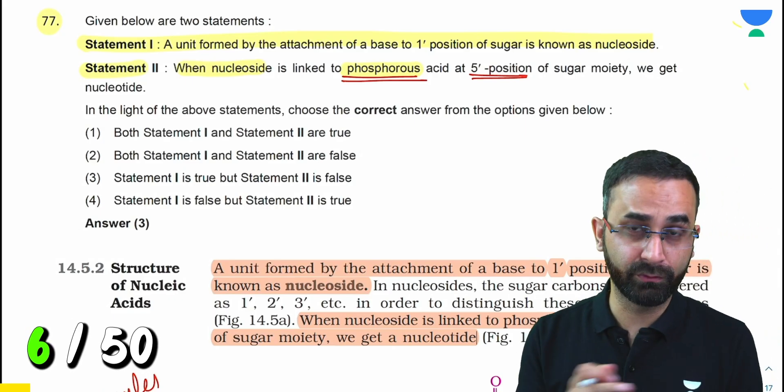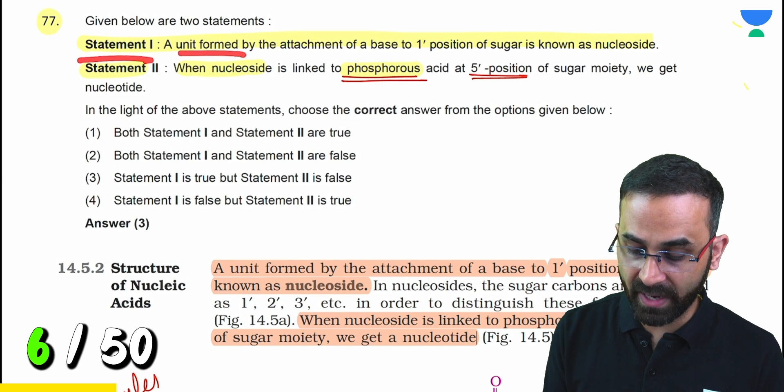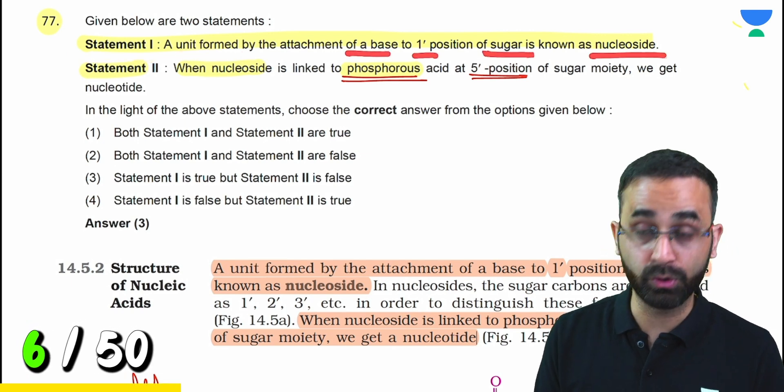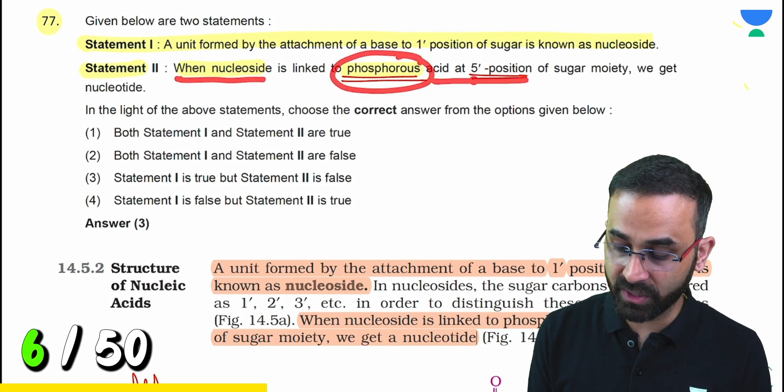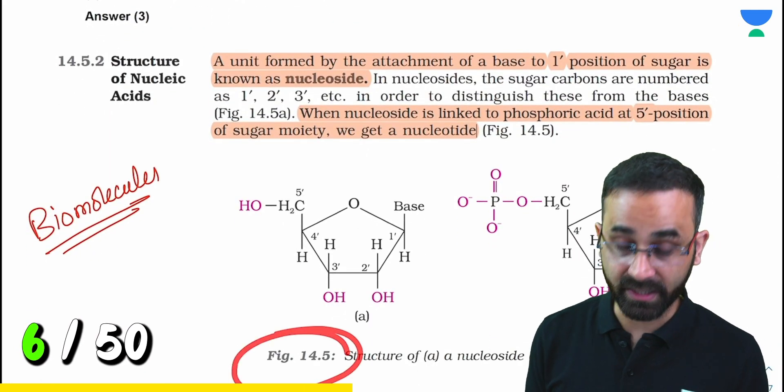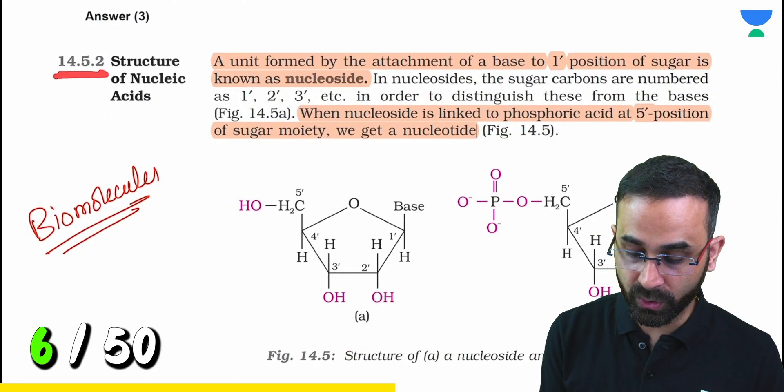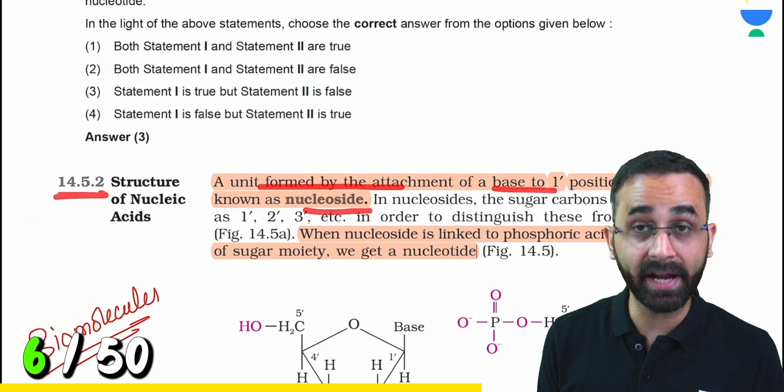Look at this question from biomolecules. Statement 1: a unit formed by the attachment of a base to 1' position of sugar is known as nucleoside, and when nucleoside is linked to phosphorous acid at 5' position of sugar moiety, we get nucleotide. NCERT article 14.5.2 states: a unit formed by attachment of a base to 1' position of sugar is known as nucleoside.